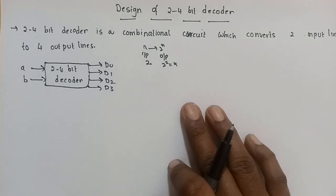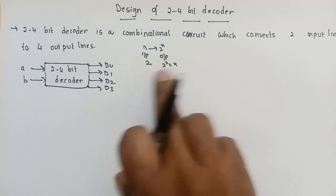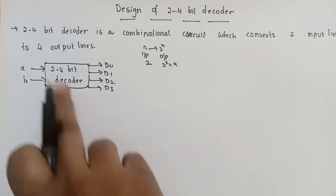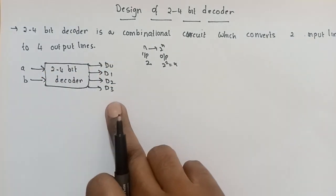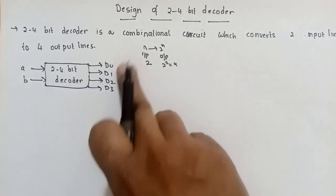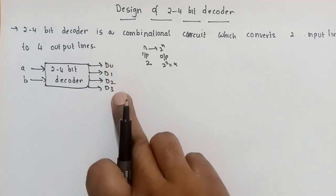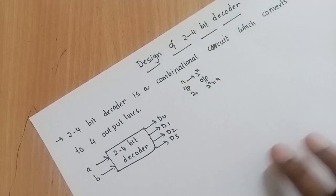The 2-to-4 decoder converts 2 input lines to 4 output lines. It is a combinational circuit with 2 input lines A and B, and 4 output lines D0, D1, D2, and D3. We have a combinational circuit design with 5 steps.